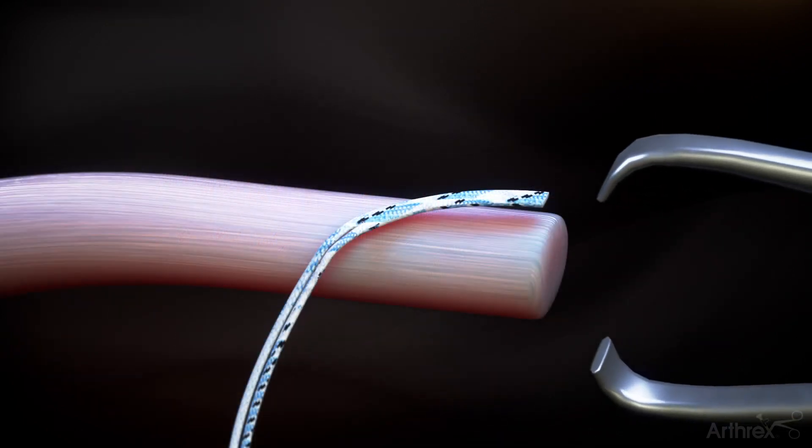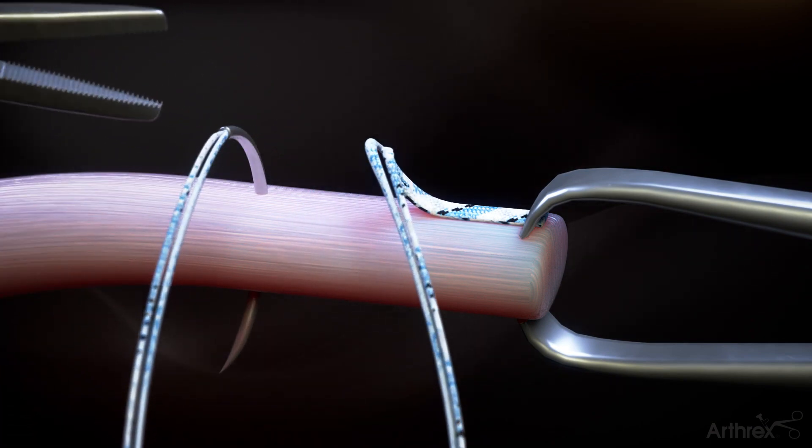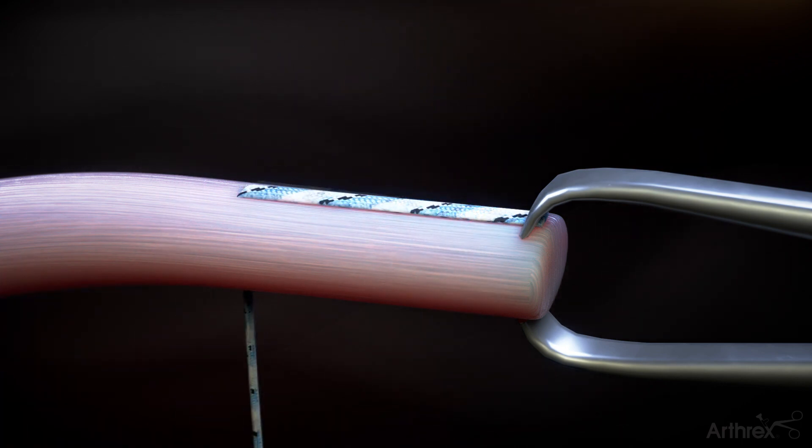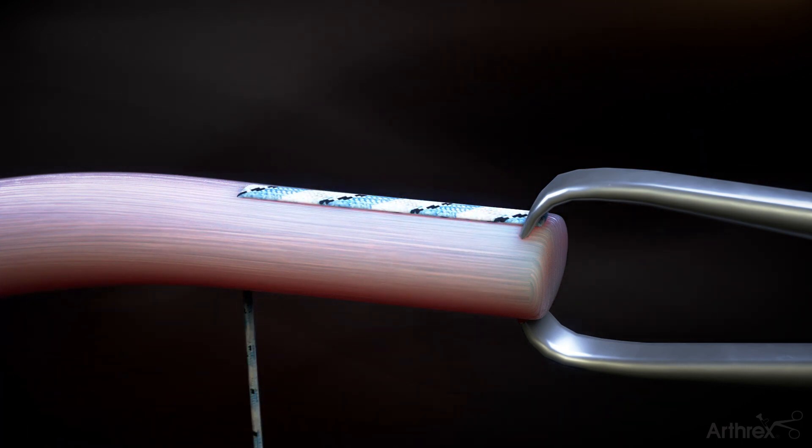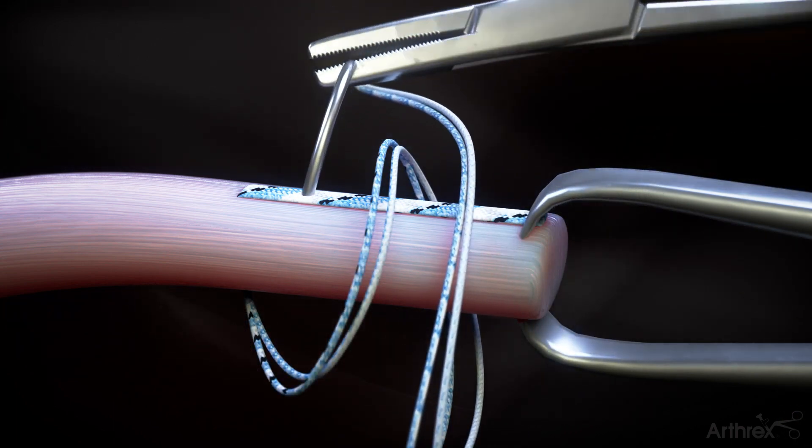Prepare the tendon at the desired length and pierce the tendon at the transition point of the suture tag to secure in place while holding the other end of the clamp. Next, wrap the suture completely around the tendon and then pass the needle through the suture tag and tendon at the starting point.